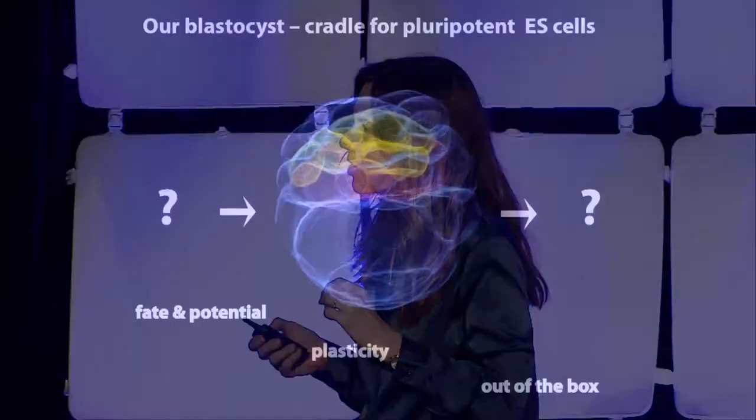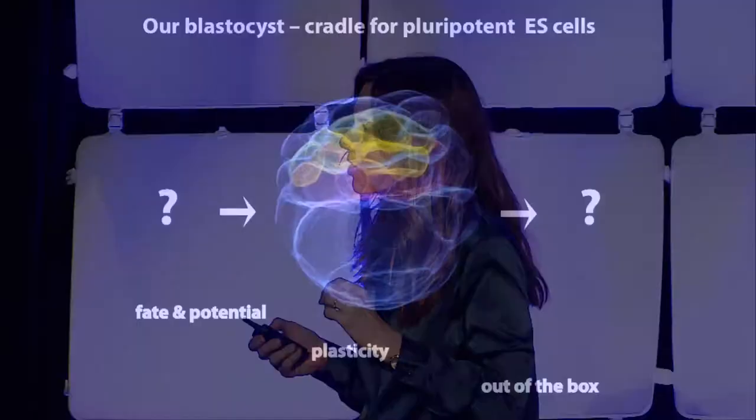Here's the blastocyst structure as we see it in the lab — one of those structures Klimt showed on Danae's blanket. I think it's absolutely beautiful in its simplicity. This is really how each of our lives starts, with that structure at seven days. It has all the components to initiate the beginning of our development. Today I would like to talk about three secrets of blastocyst life.